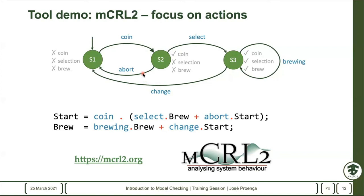MCL2 is well known because it works quite well with large systems and focuses on actions. Looking at our system, it doesn't look at propositions — what it's mainly focused on is verifying what kind of actions can be executed and what possible traces exist. This is our way of modeling in the system: you write in something called process algebra, and you say that in the beginning we can perform a coin action followed by a choice.